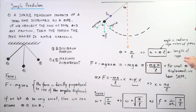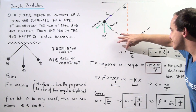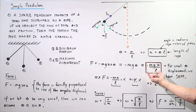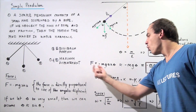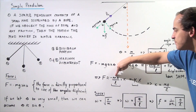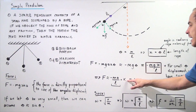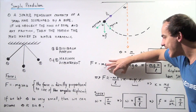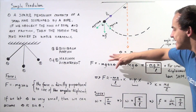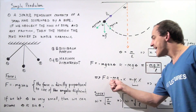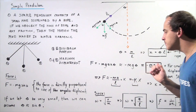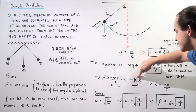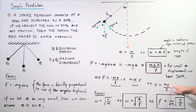Because our angular displacement theta is equal to x divided by L, we can replace theta with x divided by L. Our force is approximately equal to negative mg divided by L, multiplied by our displacement x. If we equate this to Hooke's Law, we see that our stiffness constant k is equal to mg divided by L — where the negative simply means the force acts in the opposite direction of displacement.